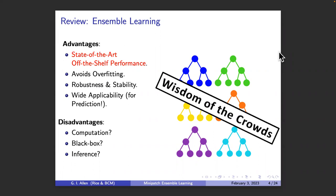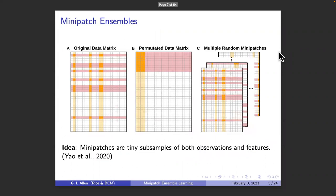Ensemble learning is really, really powerful for supervised learning — we know this well. But is it great for computation? Is it great for interpreting or making discoveries from the data, or for statistical inference? These are some of the things we're going to talk about. Specifically, I've been having a lot of fun lately with a new type of ensemble learning strategy that I call mini patch ensembles.